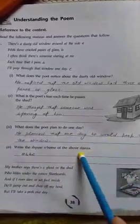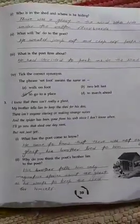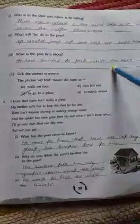Rhyme scheme of the above stanza: A, B, B, C. Now, who is in the shed and where is he hiding? There was a ghost in the shed. At the time of explanation, I told you there was a ghost according to that particular stanza.